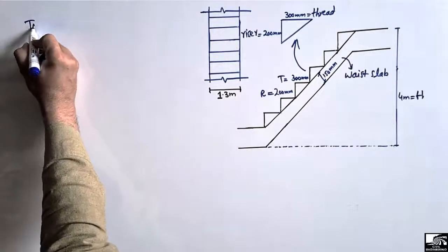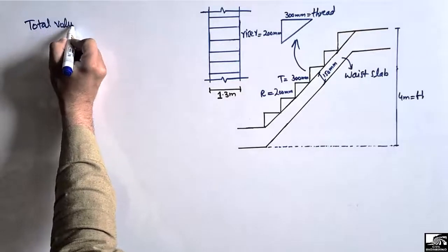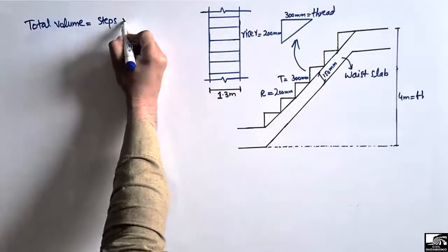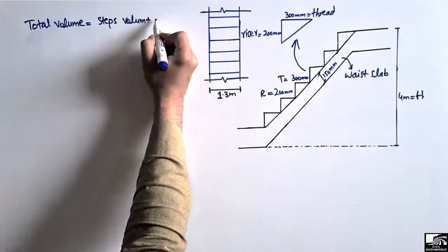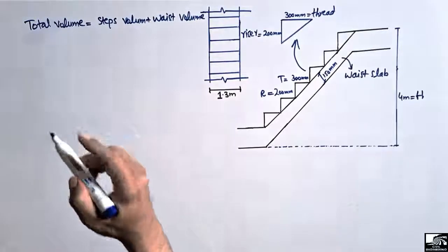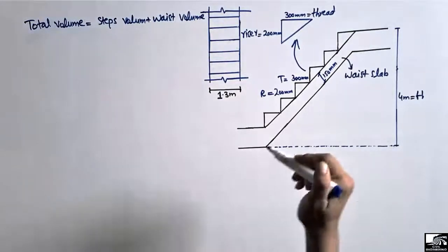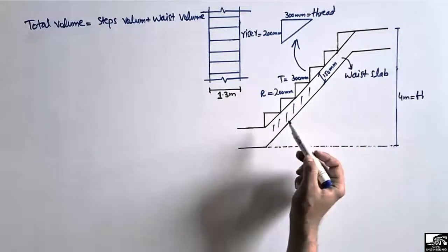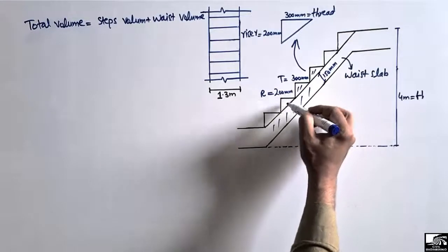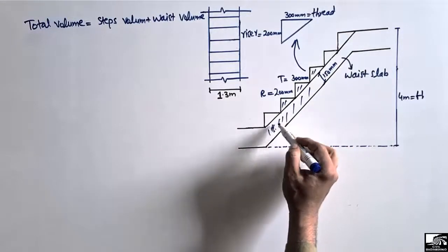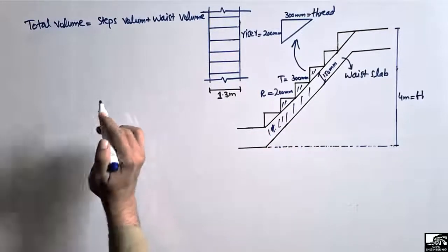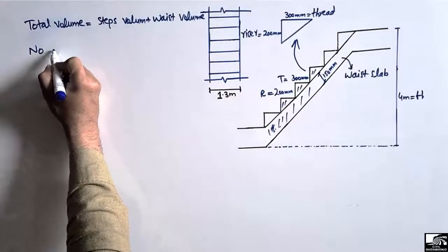The total volume of concrete in the staircase will be equal to the steps volume plus the waist slab volume. The staircase consists of two parts: the waist slab, and on top of it the steps. We find each volume separately and add them together to get the total concrete volume, ignoring the steel reinforcement.